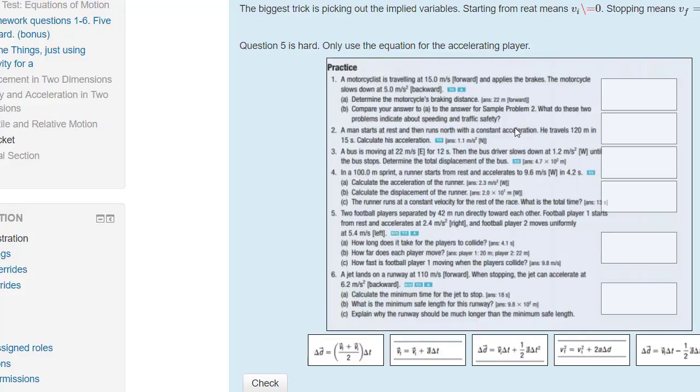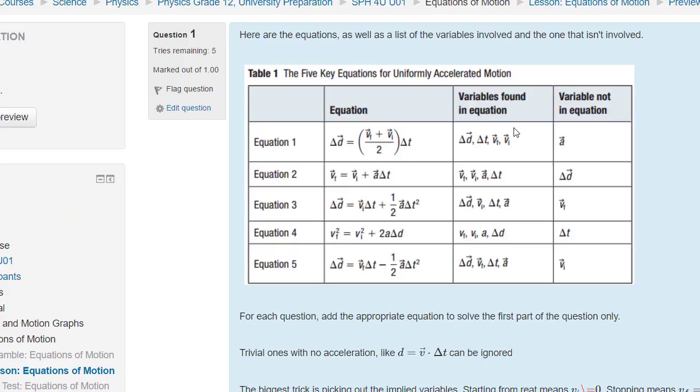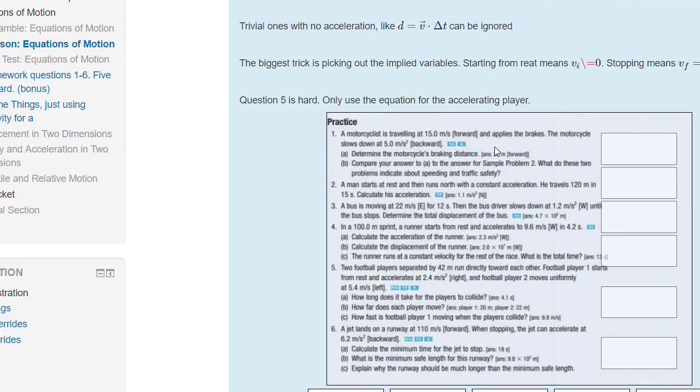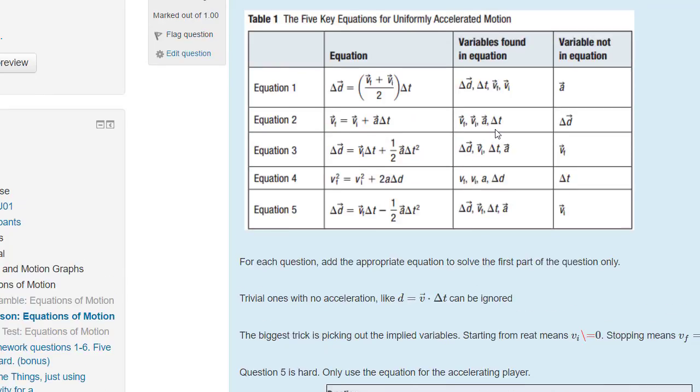And so you need to decode your way through the equation and then look up here and say, well, we were given vi and we were given vf sort of sneakily. Were we given t in this one? No, we were not given t. So vi, vf, we were given a, and d is involved. So we want vi, vf, a, and d.